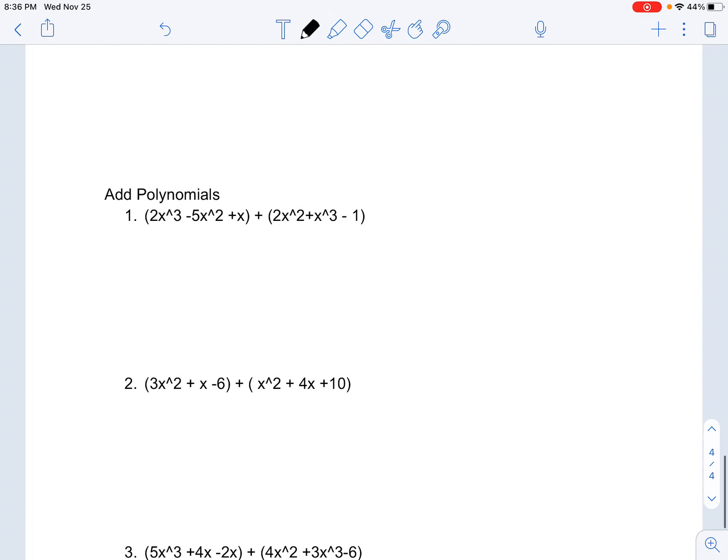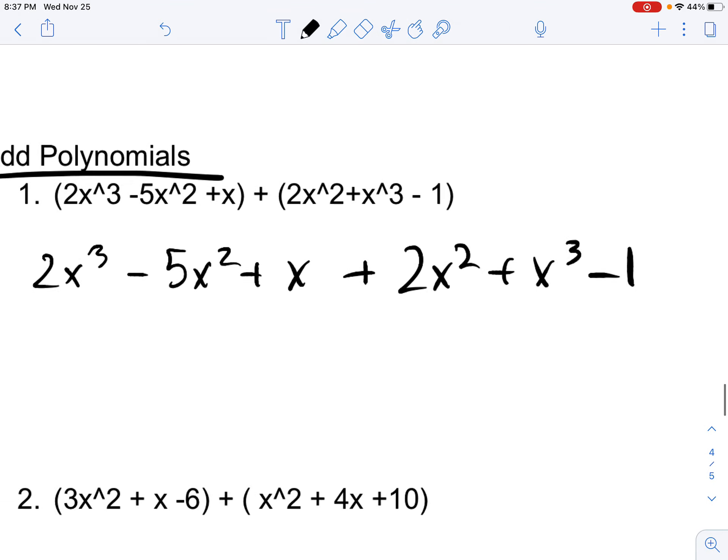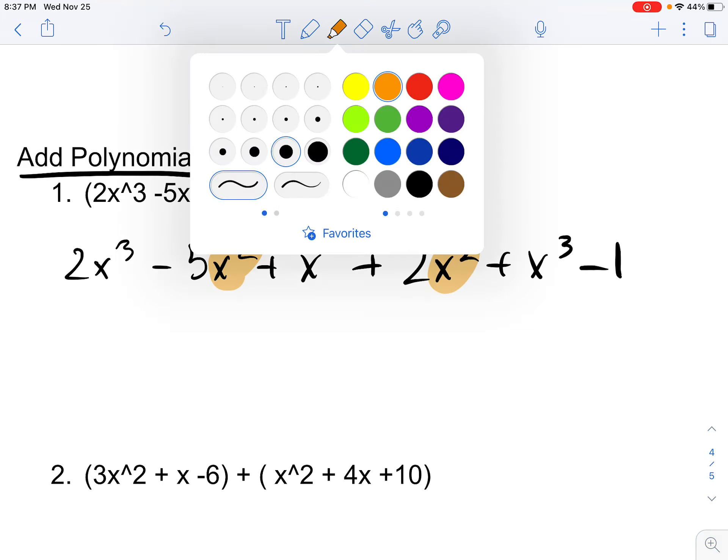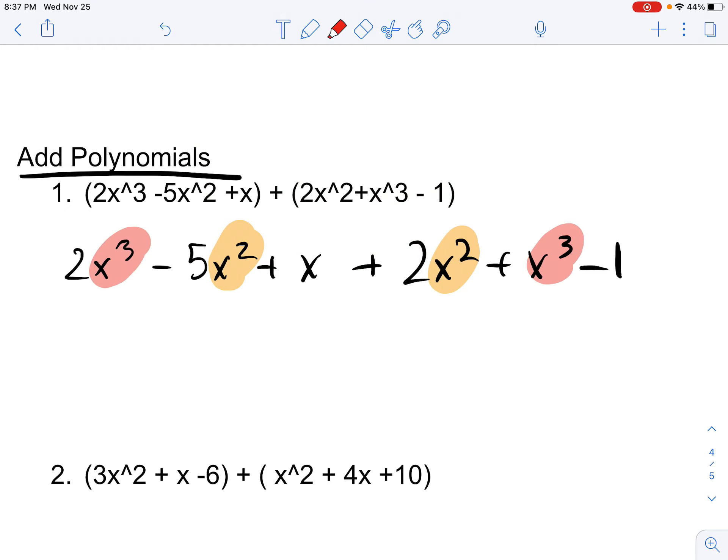Moving on. We have add polynomials. Now, adding polynomials only requires you to recognize like terms. So let's all write this down. 2X cubed minus 5X squared plus X plus 2X squared plus X cubed minus 1. Now, out of this entire equation, which powers are the same, meaning which variables have the same power? Well, that's obvious, because it's X squared and X cubed.